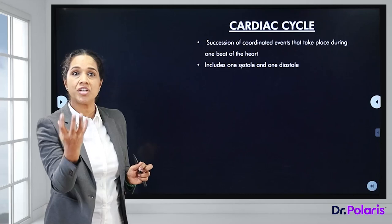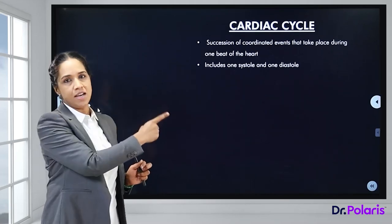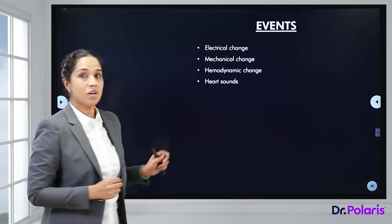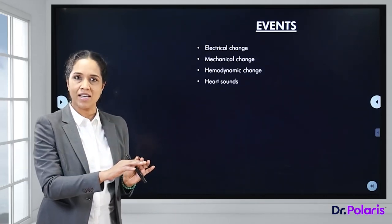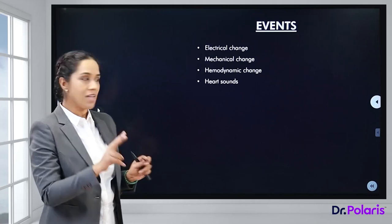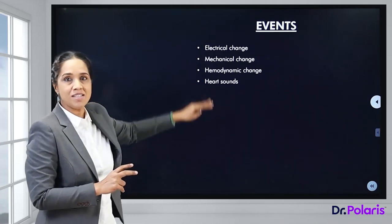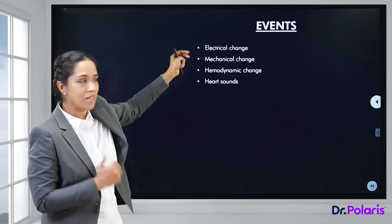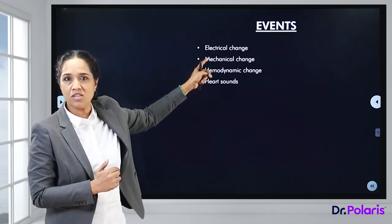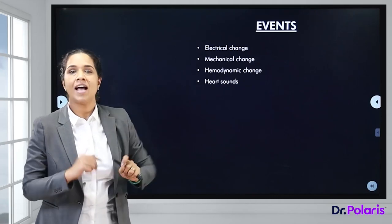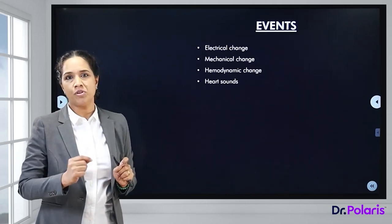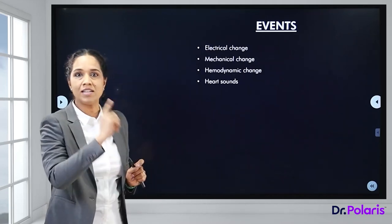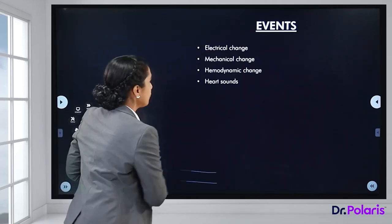Systole is when the heart chambers are contracting, and diastole is when the heart chambers are relaxing. The events happening in a cardiac cycle between two beats are categorized into several groups: electrical changes, mechanical changes, hemodynamic changes, and heart sounds produced during the cardiac cycle. We will be going into the details of each of these phases.